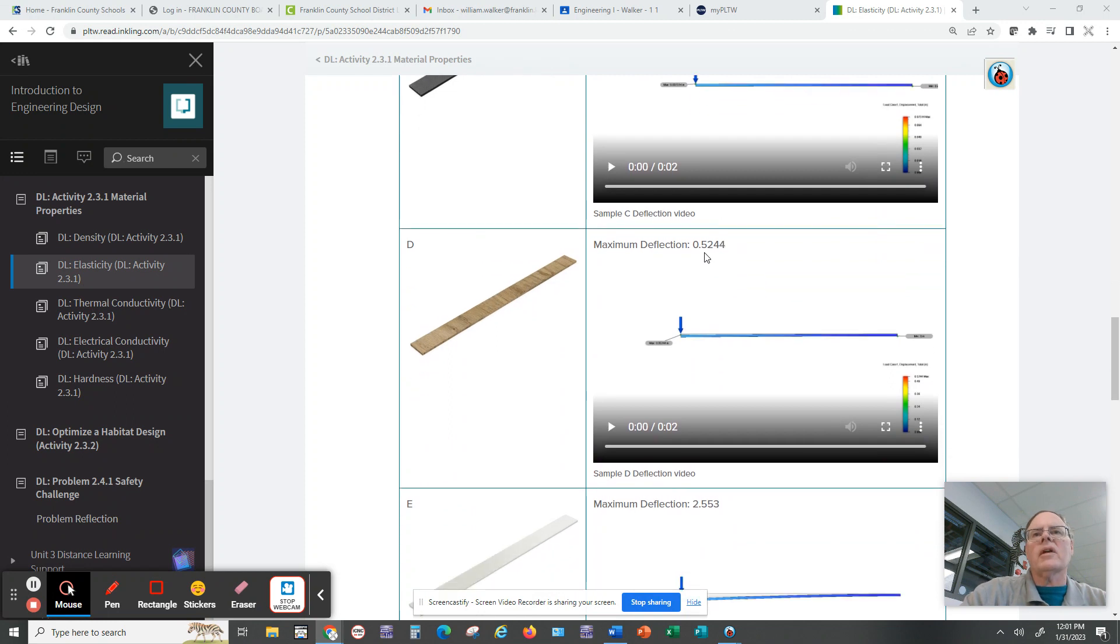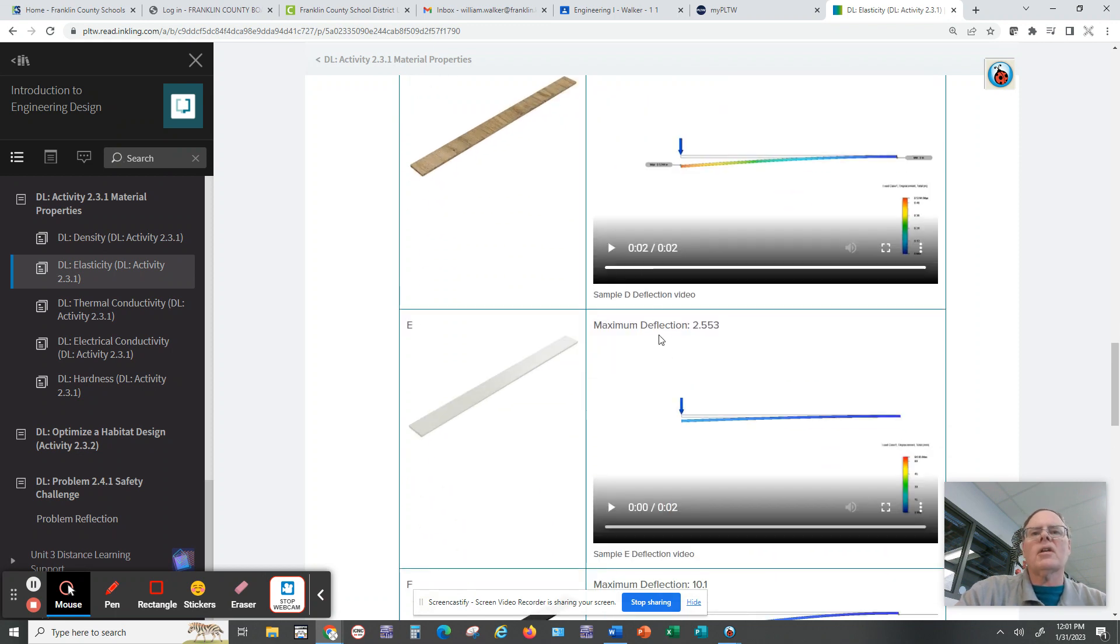If you get down near here, you're deflecting a whole half an inch. If you play the little video, you'll notice the board actually bends a half an inch. These colors represent the amount of deflection that's happening. The red means more deflection, the blue means less deflection. You can see how far it's deflecting, and they're giving you a maximum deflection here at the top.